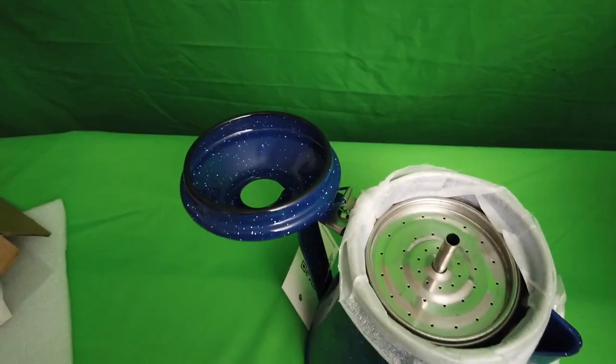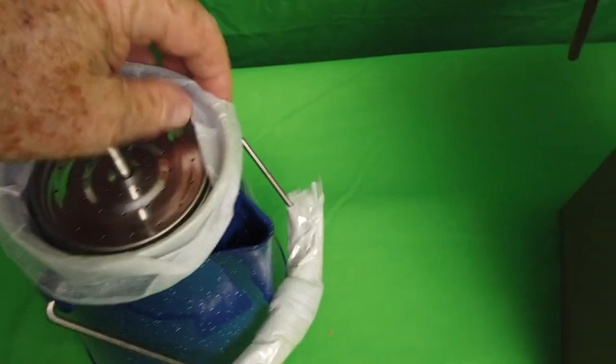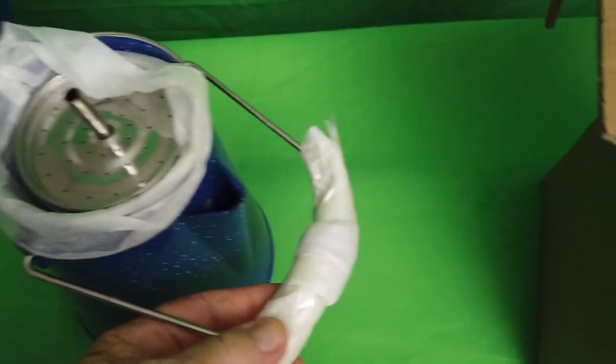This lid you can't lose, it's attached to the pot. It's got packing around the filter box and around the handle.